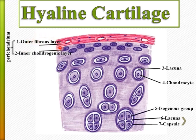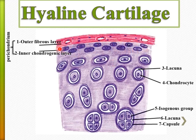The outer layer is called fibrous because it contains collagen type one — the strongest type of collagen — to which tendons of the muscles are attached. This collagen fiber type one is formed by fibroblasts. There are blood vessels in this outer layer. The inner layer is the chondrogenic layer.